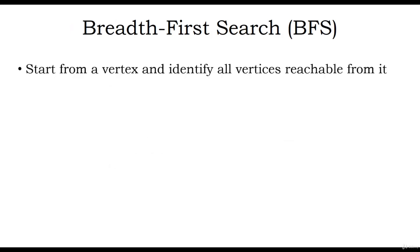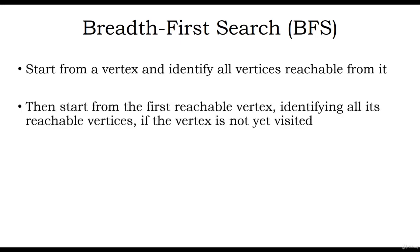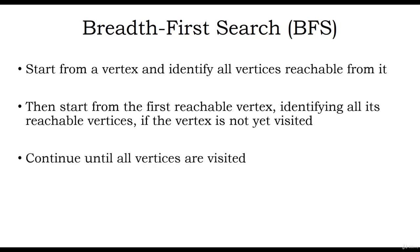First, we will see how breadth first search algorithm works. BFS starts from a vertex and identifies all the vertices that are reachable from it — that is, it traverses through all its edges and then starts from the first reachable vertex, identifying all the reachable vertices if the vertex is not yet visited. This process continues until all the vertices are visited.